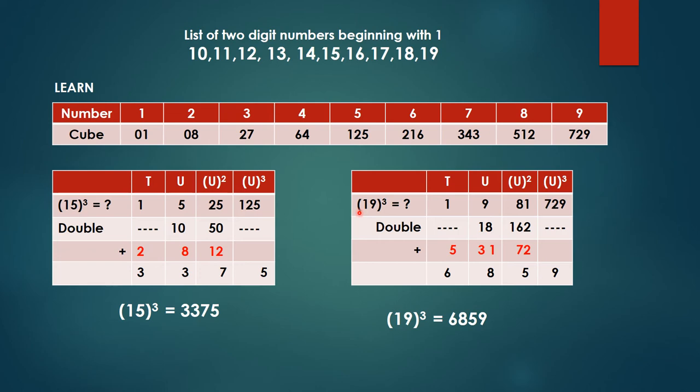Now let's see the next example, that is 19 cube or 19 to the power 3 equal to how much. Now tens place again is 1, units place the number given here is 9. 9 square is 81, 9 cube is 729.